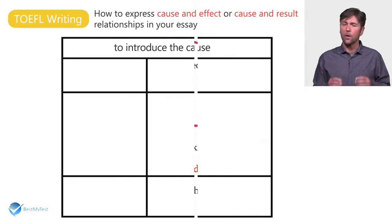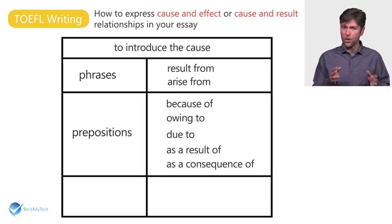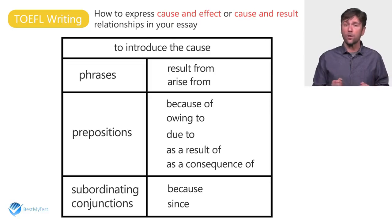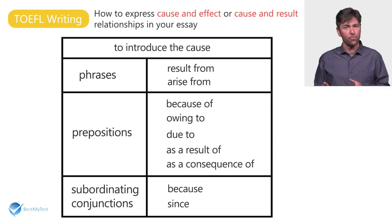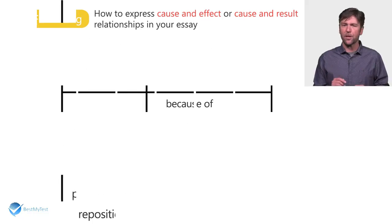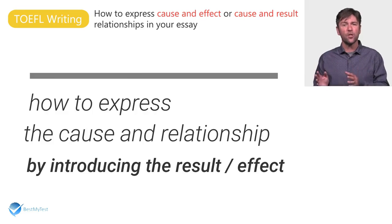So far, we've talked about how to introduce the cause using phrases like result from and arise from, prepositions like because of, owing to, due to, as a result of, and as a consequence of, and subordinating conjunctions like because and since. It might be a good idea to take a five-minute break and then review what you've learned, because in the next section we're going to talk about how to express the cause and effect relationship by introducing the result or effect.